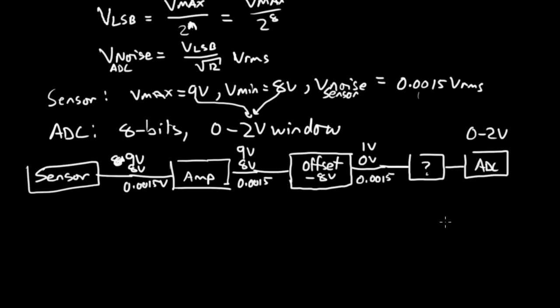Looking at this example, the first thing you might want to say is that we want to map the maximum voltage coming out of the sensor to this 2 volts. And this 2 volts is what we're going to plug in for VMAX. So for this stage, instead of a question mark, we're going to say that's a multiply by 2 stage. So, coming out of there, there's 2 volts, 0 volts minimum, and our noise basically doubles because we're multiplying by 2.